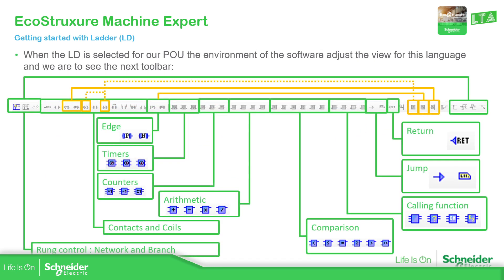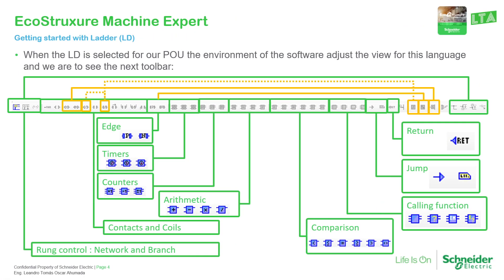Once you create the POU, you can see this toolbar at the top. The first two elements are related to how you can create the rungs — here we call them networks, similar to what you may know as rungs from the M221. Then we have the control of the branches. Next to this, we have the comments, and then we have everything related to the contacts and the different kinds of contacts that we have.